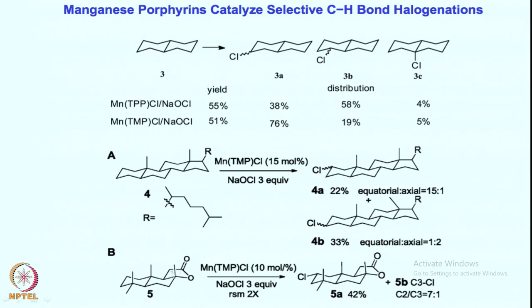Looking at another compound, halogenation is not possible in the deactivated ring. The mechanism and reactivity pattern are similar to what we have seen in the hydroxylation case — those rings get deactivated and that also makes the adjacent ring somewhat deactivated — leaving two positions available for reaction. Of these, the equatorial position that is sterically least hindered reacts efficiently. Therefore, both hydroxylation and halogenation reaction selectivity predominantly follow what has been seen in the iron-oxygen chemistry or iron high-valent oxo intermediates.